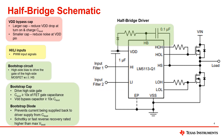Next, we will move on to the bootstrap circuit. This circuit serves as a high-side bias to drive the high-side FET. The bootstrap capacitor will drive the high-side gate since it charges when the low-side gate is on. When building the bootstrap circuit, a good rule to follow is to use a bootstrap capacitor with a value that is equal to or greater than 10 times the FET gate capacitance.